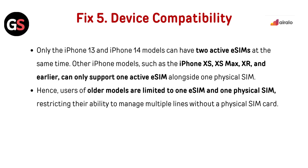Fix 5: Device compatibility. Only the iPhone 13 and iPhone 14 models can have two active eSIMs at the same time. Other iPhone models such as the iPhone XS, XS Max, XR and earlier can only support one active SIM alongside one physical SIM. Hence, users of older models are limited to one eSIM and one physical SIM, restricting their ability to manage multiple lines without a physical SIM card.